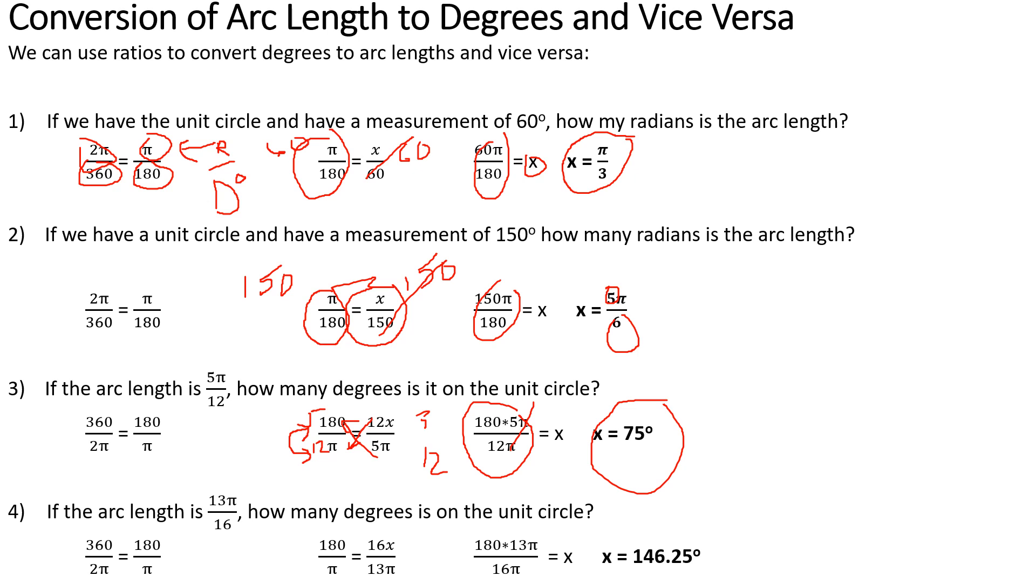Similarly, I've got 180/π equals, I'm looking at this because I want to know how many degrees it is, 13π/6. I'm going to reverse it here, 6x/13π. Multiply the reciprocal of them, 13 in the numerator, 6 in the denominator. So I'm left with 180 times 13π over 6π. The π's cancel out. 180 times 13 divided by 6 equals 146.25 degrees.